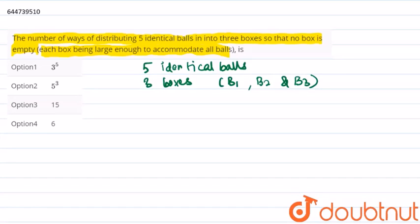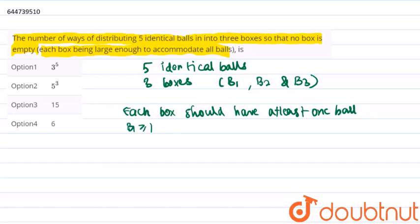We need to distribute balls such that each box should have at least one ball. Therefore, B1 should be greater than or equal to one, B2 should be greater than or equal to one...